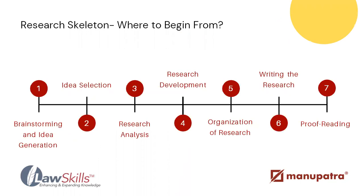Taking them one by one — first, the research skeleton. The first step is brainstorming and idea generation. Law students often complain that their desire to write a research paper is curbed because they don't know which topic to write on. Spending the first step on brainstorming and generating ideas that interest you is a very good starting point. Second is selecting an idea from a bucket of five or six ideas — whichever seems the most realistic, most interesting, and comprehensible within the time you have.